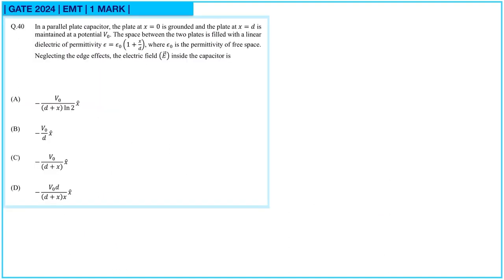Next question. In a parallel plate capacitor, the plate at x equal to 0 is grounded and the plate at x equal to d is maintained at potential V₀. The space between the two plates is filled with a linear dielectric of permittivity ε equal to ε₀ times (1 plus x by d), where ε₀ is the permittivity of free space. Neglecting edge effects, the electric field inside the capacitor is?